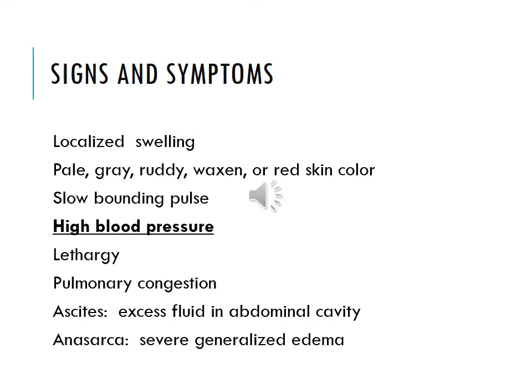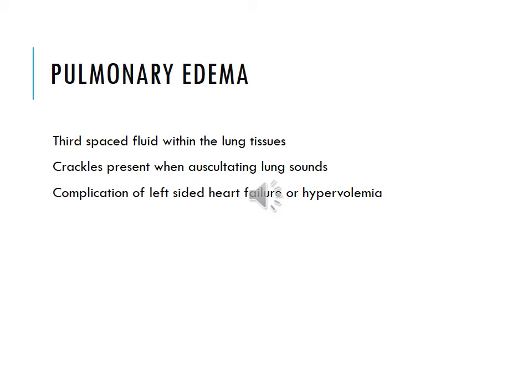You'll see a slow bounding pulse, high blood pressure, lethargy, pulmonary congestion. You may have ascites, which is excess fluid in the abdominal cavity. You may have anasarca, which is generalized severe edema. Pulmonary edema is edema within the lung tissues. Usually you'll hear crackles when it's present; it's a complication of left-sided heart failure, or it could be due to too much volume — hypervolemia.